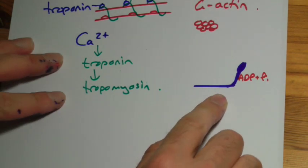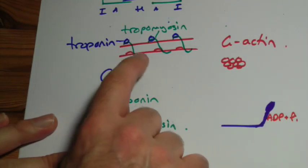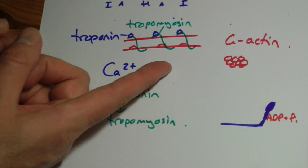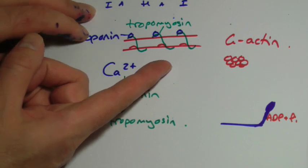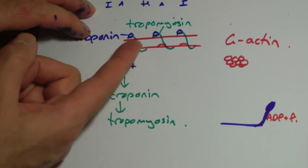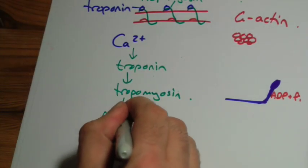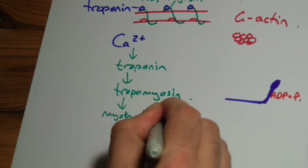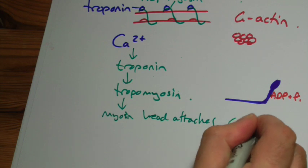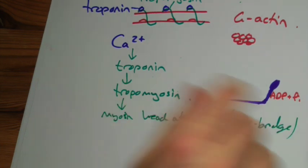Now, when this tropomyosin has moved out of the way, that head can now attach to these binding sites. So if you like, it's normally sitting like that. What it will do, it will attach to the binding site. So it moves in and attaches. Myosin head attaches. This is called forming a crossbridge. And it's a weak chemical bond between the two things.